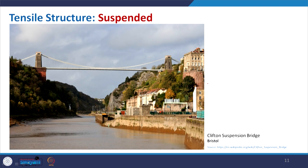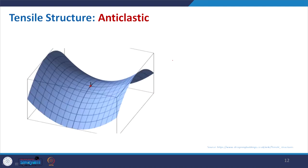This is another example — the Clifton Suspension Bridge in Bristol. You can see how this has been made; it is pretty similar in appearance to the Golden Gate Bridge, but this is another example in the same category.